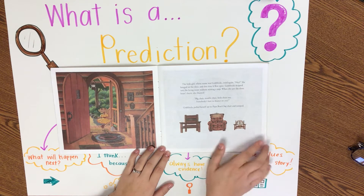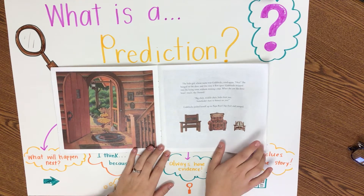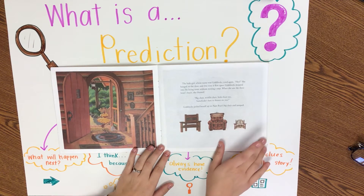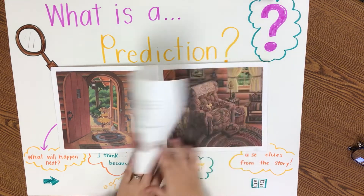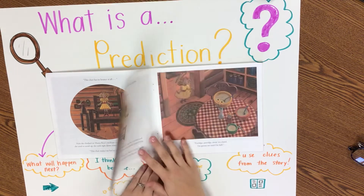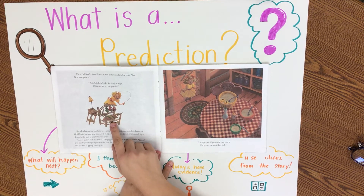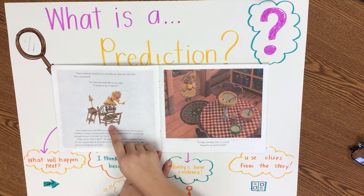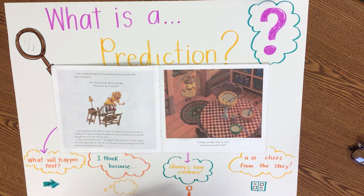When she bounces on the chairs, what do you predict will happen next? What's going to happen to the last chair? She's going to break it! She's going to break the chair. We predicted that when she went into the house she was going to jump on the chairs, and when she jumped on the chairs, she broke the chair.